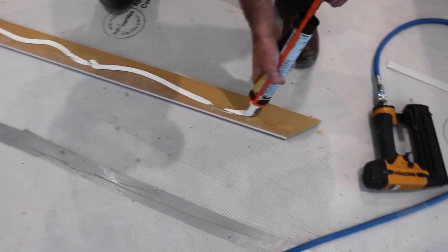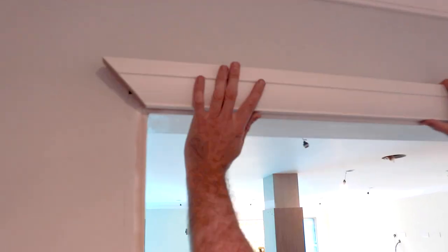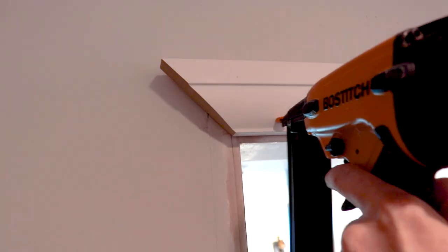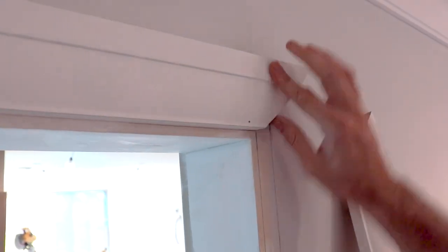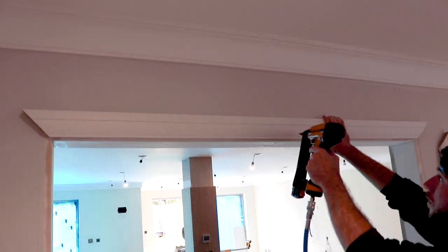Apply adhesive to the back of the header, place it on your wall in line with your markings and fix it to the wall with a nail gun. We'd recommend nailing either end of the piece to keep it in place first and then add a couple more pins centrally.